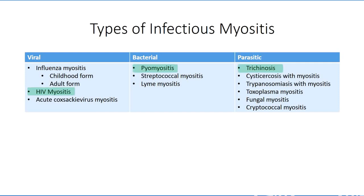Some of the conditions we are overlooking may initially seem surprising. Lyme disease, for example, is endemic to the Northeast United States and discussed in detail in other courses. Lyme myositis, on the other hand, is a relatively rare side effect that is almost never observed in a clinical setting, and if present, is not of much significance to the course of the treatment.